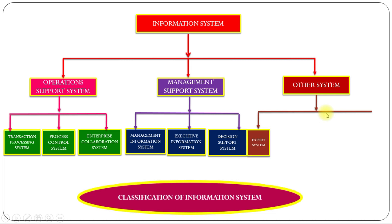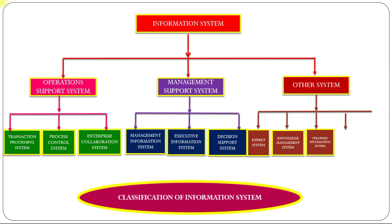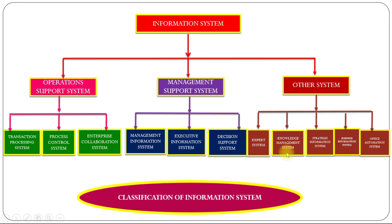Other system is classified into five categories: expert system, knowledge management system, strategic information system, business information system, and office automation system.